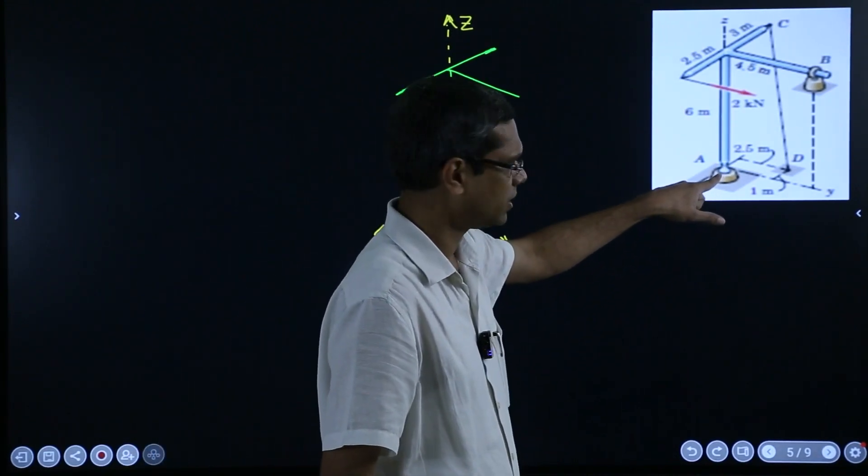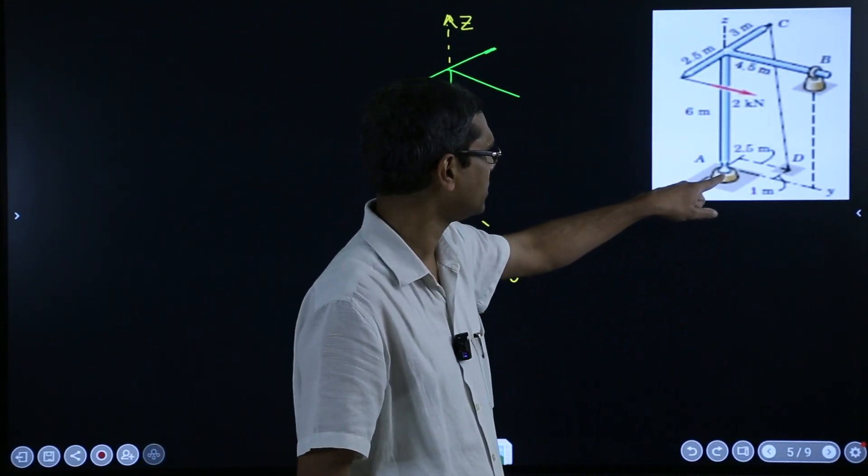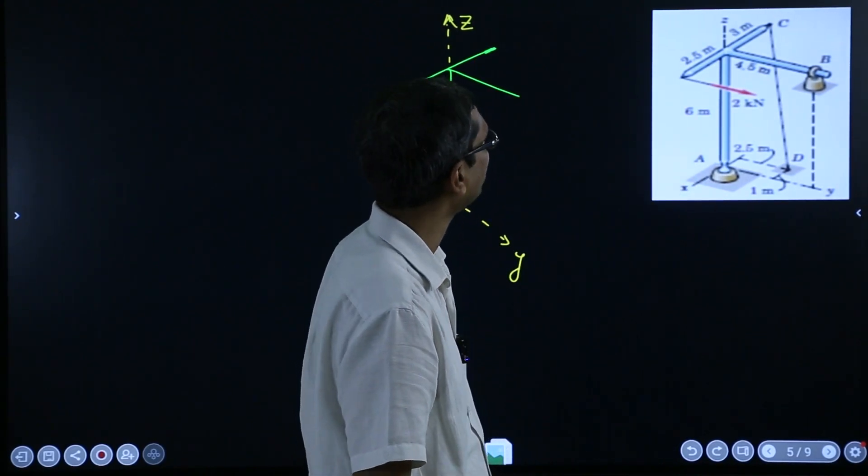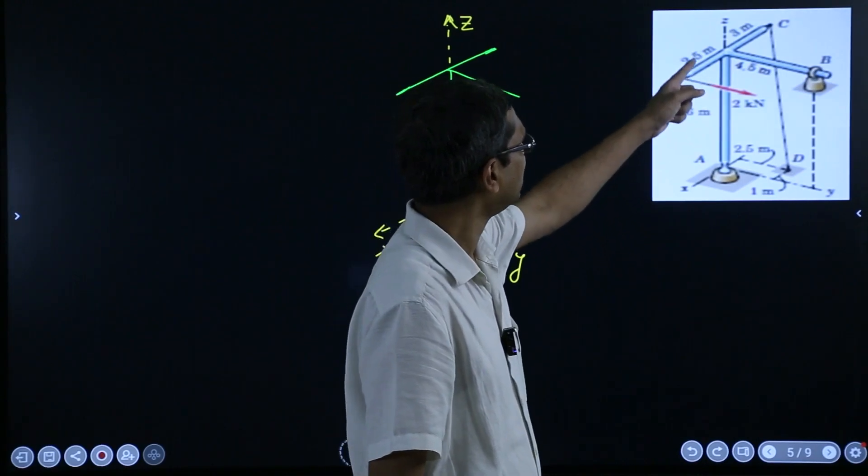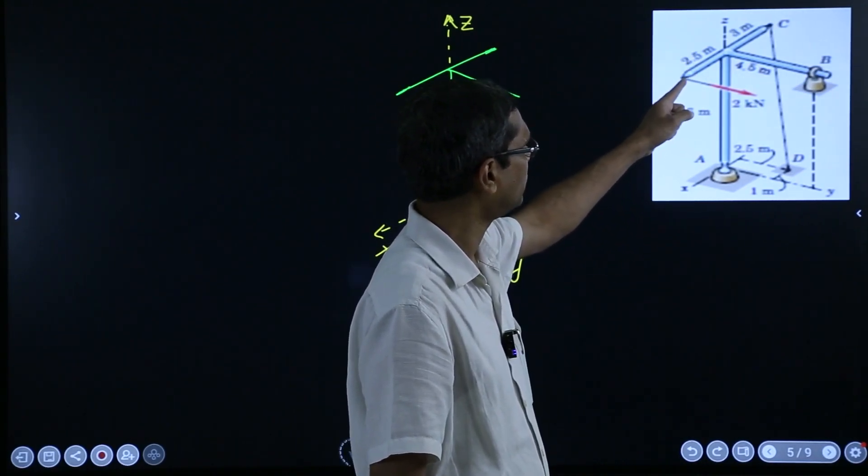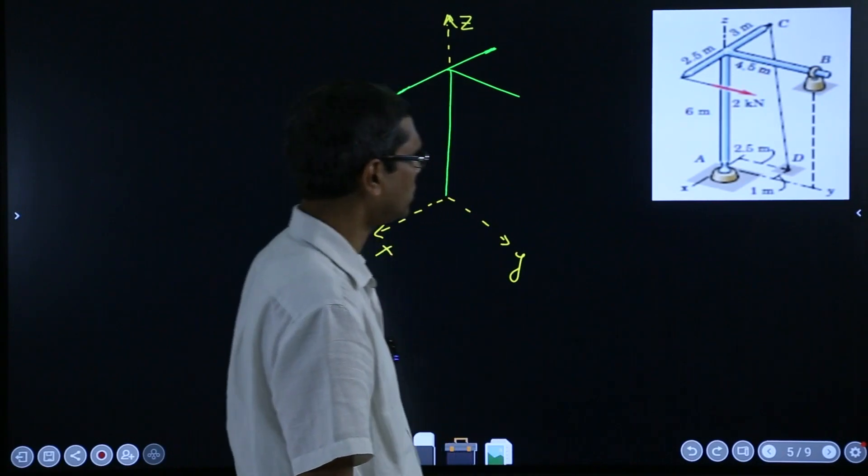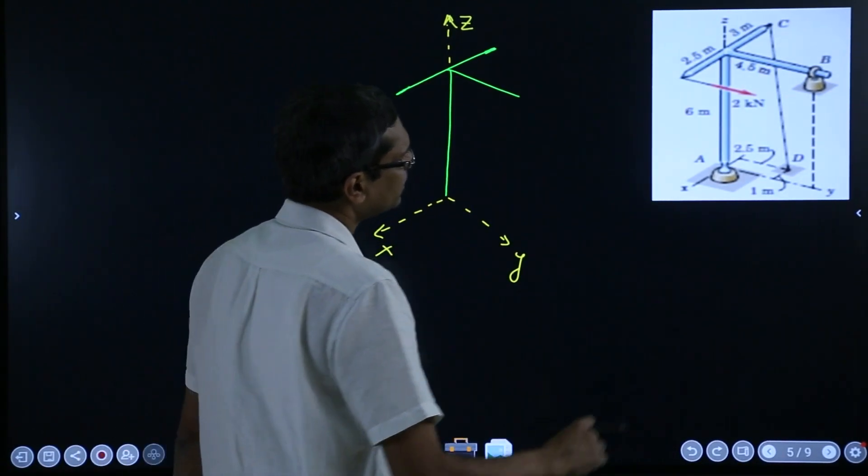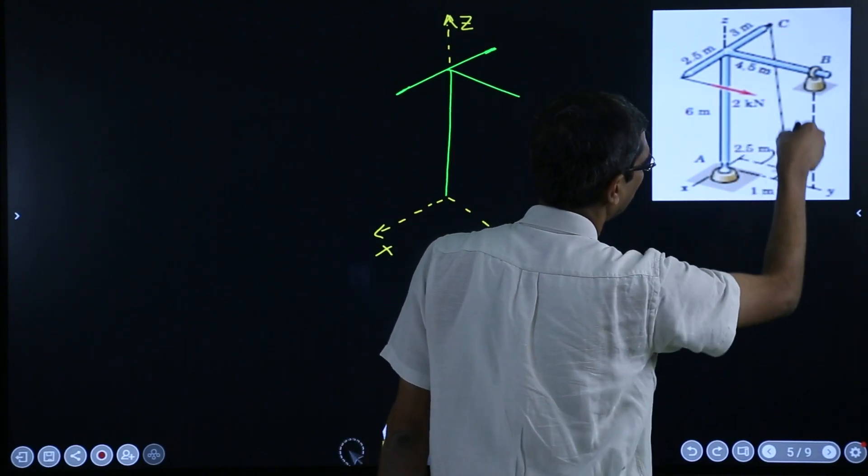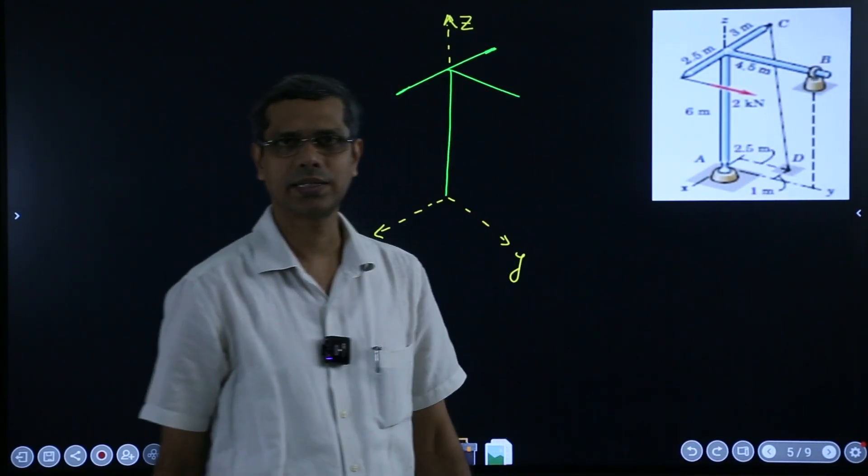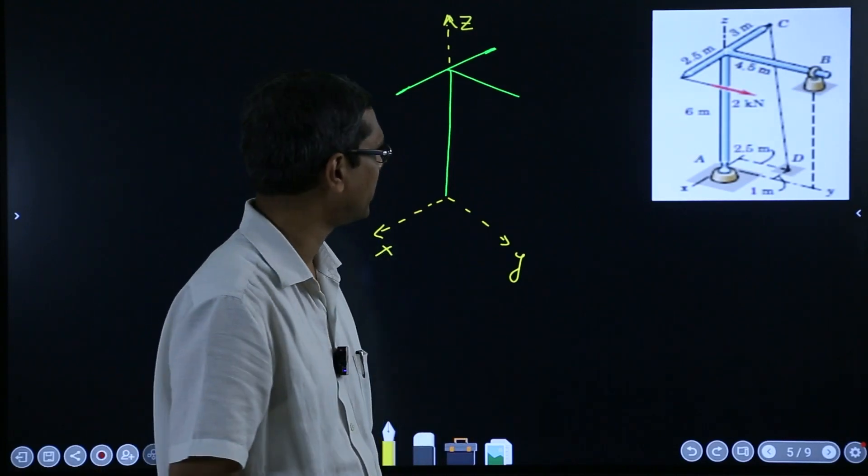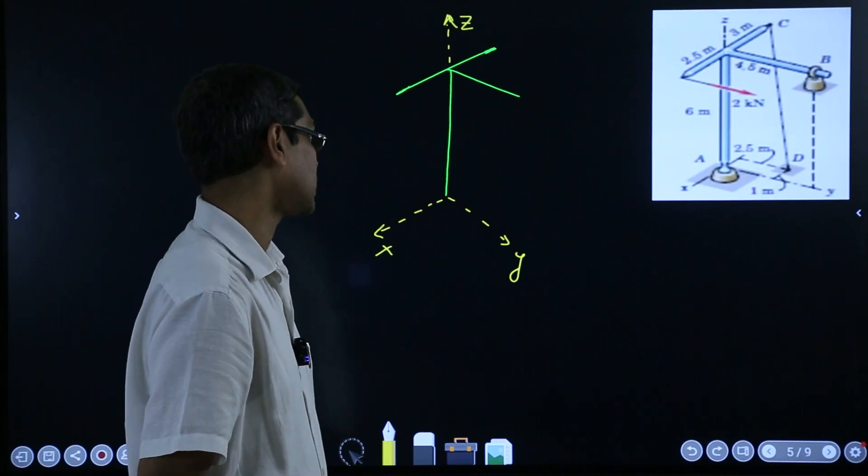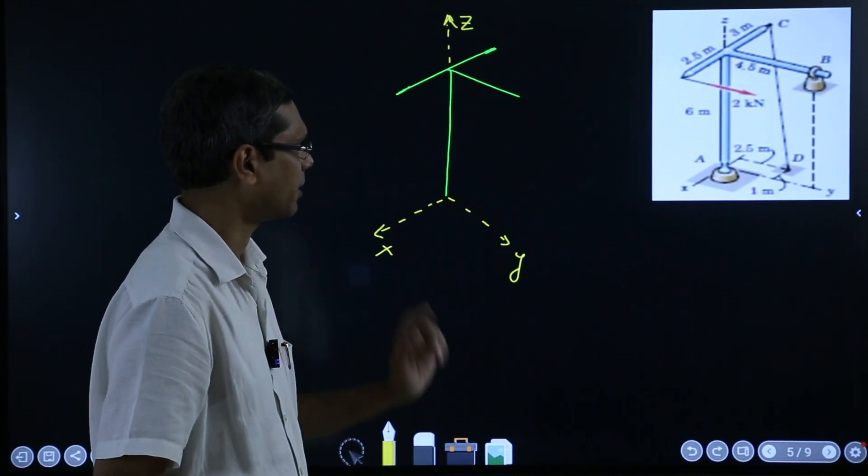And now here there is a ball joint, ball and socket joint, so that means here also it is frictionless and only reactions will come and not reaction moments. And now we are pulling this bracket or frame with a force 2 kN like this and it is stopped from moving by this cable CD. So this is a cable CD which is keeping this whole frame intact, and we are supposed to find out that tension T in the cable.